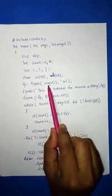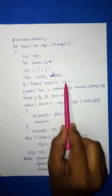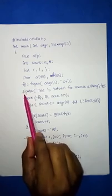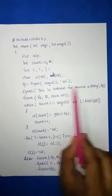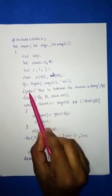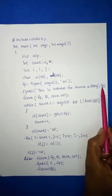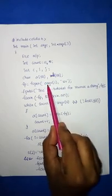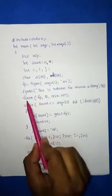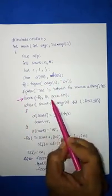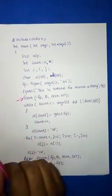fp is opened with fopen(argv[1], "w+"), opening the file for both writing and reading. Then fputs writes the string "this is tutorial for reversing a string" into the file pointed to by fp. Next, fseek(fp, 0, SEEK_SET) resets the file pointer to position zero so you can read the first N characters.